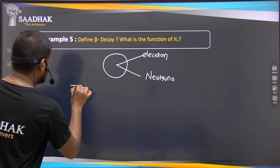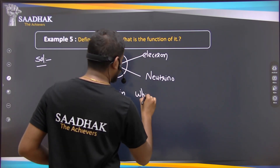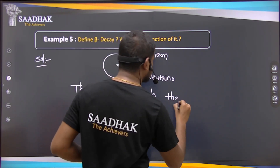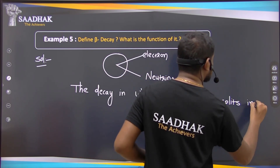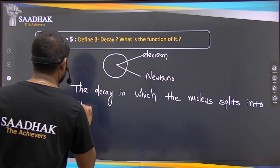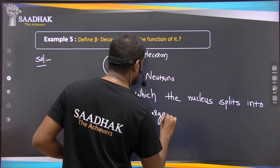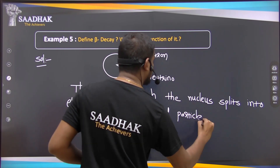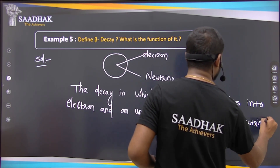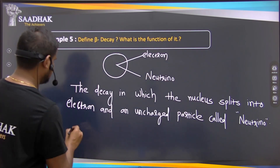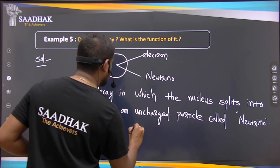Beta decay is the radioactive decay in which the nucleus splits into an electron and an uncharged particle called neutrino. This phenomenon is called the beta decay.